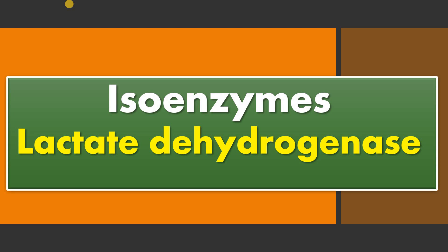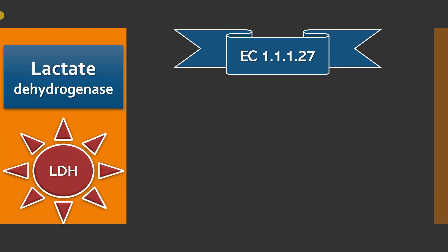Hi, this is Dr. Vijay. Today we are going to study yet another important isoenzyme — lactate dehydrogenase. The standard abbreviation for lactate dehydrogenase is LDH. The enzyme commission number for this lactate dehydrogenase is EC 1.1.1.27.